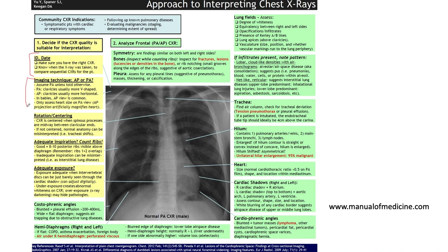Ascertain the imaging technique: is this a PA film or an AP film? A posterior-anterior film is how we do normal X-rays by convention, while anteroposterior speaks to the X-ray being done via a bedside unit. In a PA film, the clavicles are usually more V-shaped, but in an AP film they are more horizontal. Only assess the heart size on a PA view, because an AP projection artificially magnifies the heart, making the cardiothoracic ratio appear larger than it actually is.